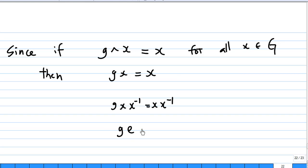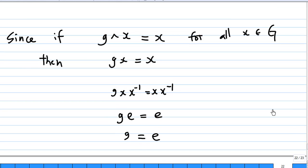Therefore, g times x times x inverse equals x times x inverse. And we know x times x inverse is e. So, g times e equals e. And g times e is actually g, since e is identity. So, we end up g is equal to e. And this means that if g^x equals x for all x, g must be equal to e.